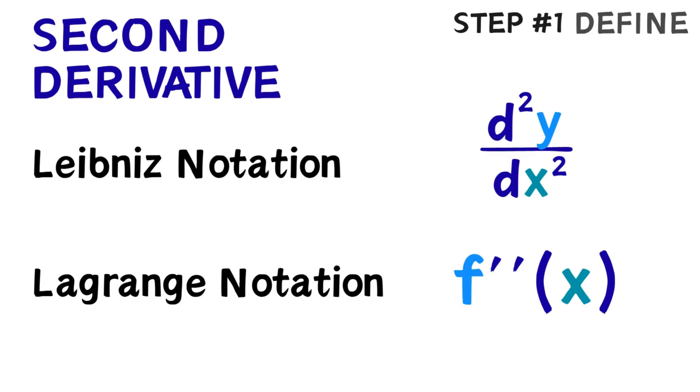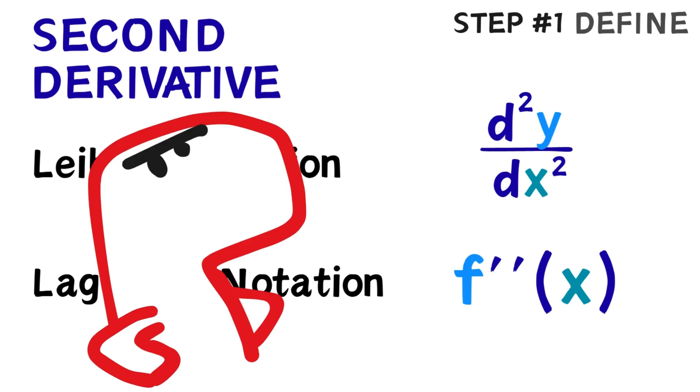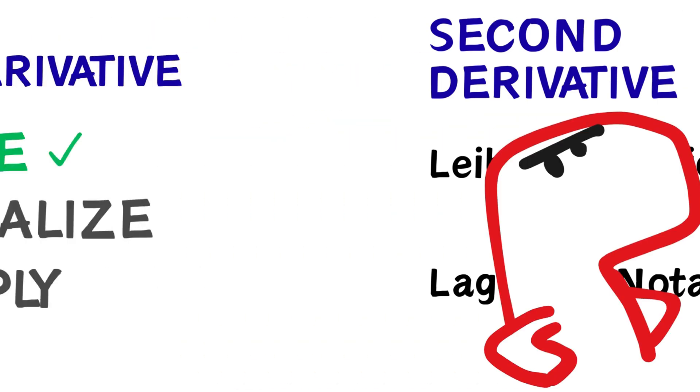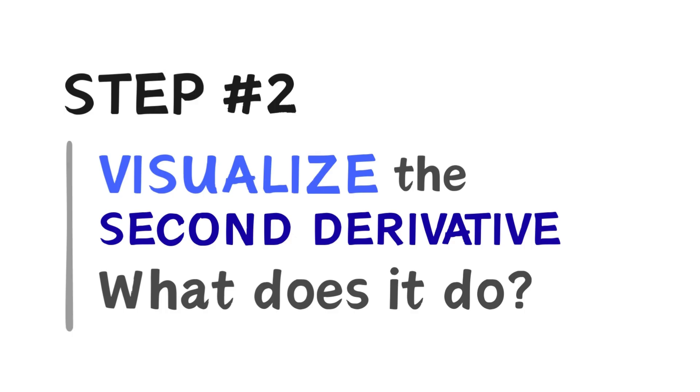The second derivative, or the rate at which the rate of change is changing. Maybe a bit confusing still, so let's clear that up in step 2. Step 2. What does the second derivative actually show us?